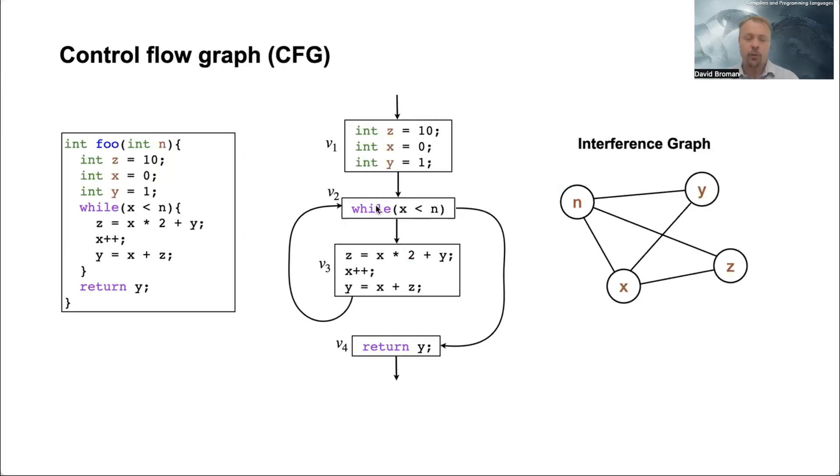You see that we have four vertices, and each of these blocks is called a basic block. And from that, after we've done all the liveness analysis, we can conclude that we have an interference graph.